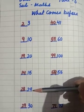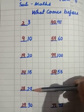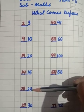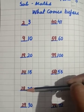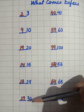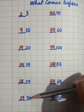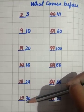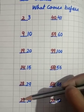Twenty-nine comes before. Twenty-nine se pahele kaunsa number aata hai? Twenty-eight. Thirty comes before. Thirty se pahele kaunsa number aata hai? Twenty-nine.